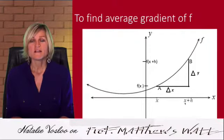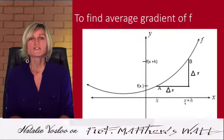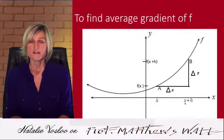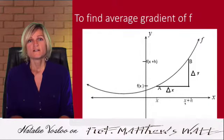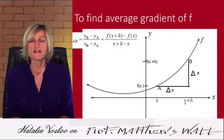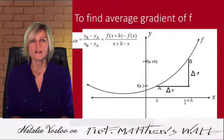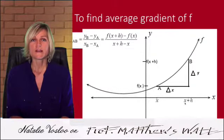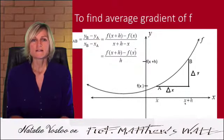The only problem is the gradient changes, as you can see. This is not a straight line, so the gradient will change throughout the function. So it's not going to be an accurate gradient for the function because it changes. So if we look at the average gradient, which is the change in y over the change in x, we take f of x plus h minus f of x over x plus h minus x. As you can see at the bottom, the two x's will cancel, and we'll be left with f of x plus h minus f of x over h.